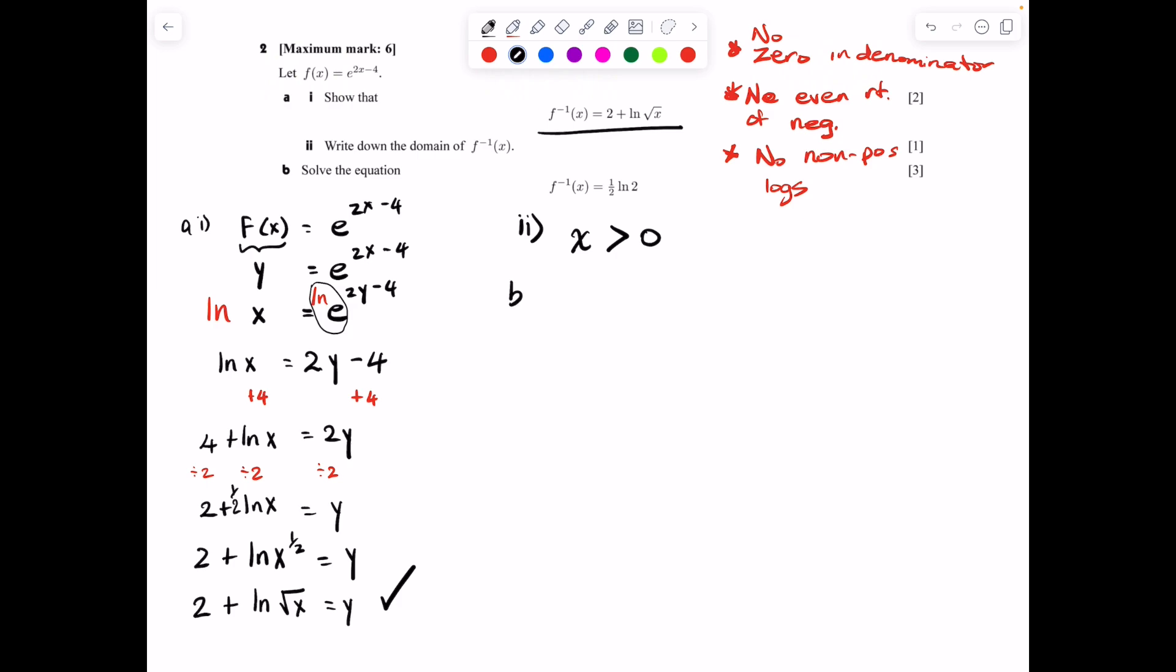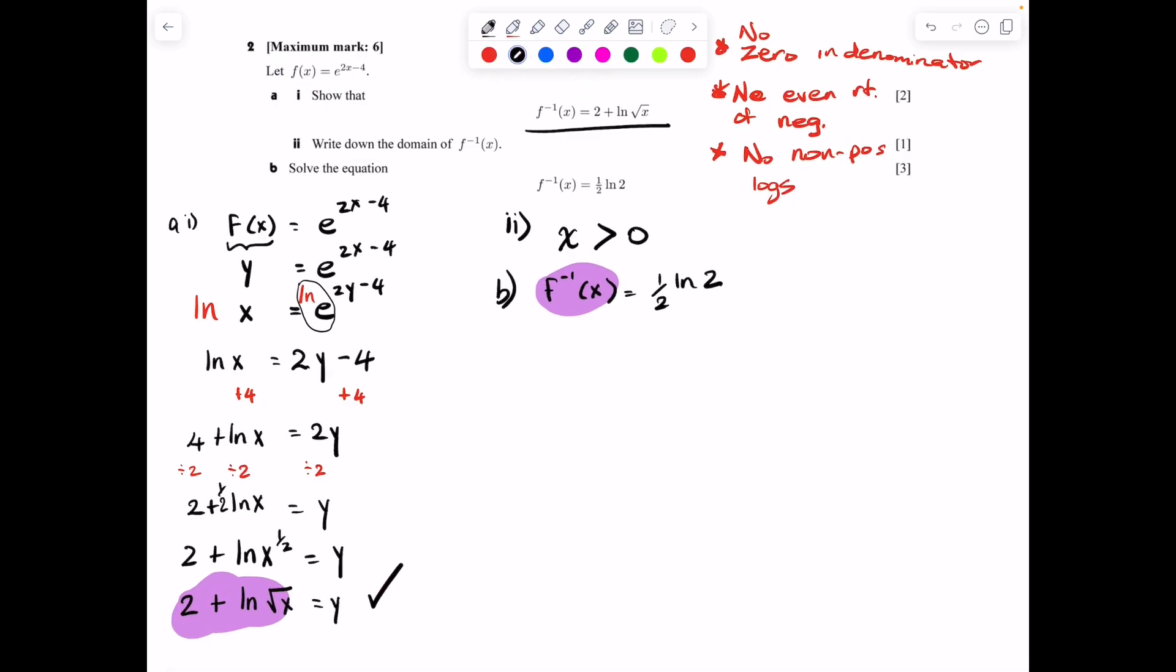All right. Now we are ready to actually solve the equation. And so the equation F^(-1)(x) = 1/2 ln 2. So fortunately, we do have an expression for F inverse, which we found right here. So we can go ahead, plug that in. And we get 2 + ln√x = 1/2 ln 2. Now the goal here is to isolate this x. We want to solve for x.